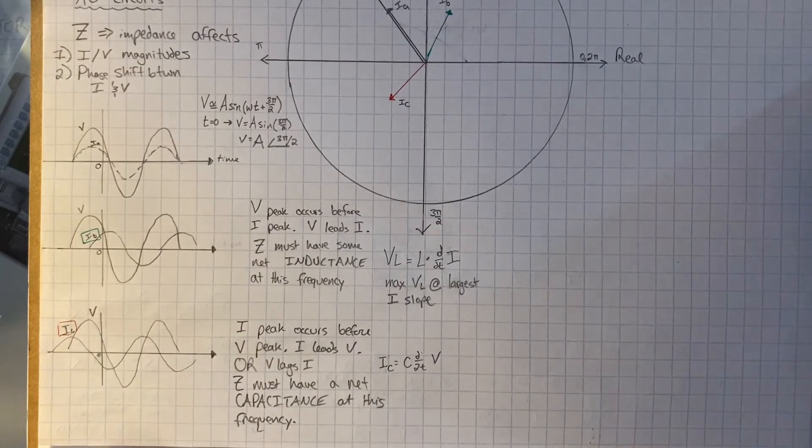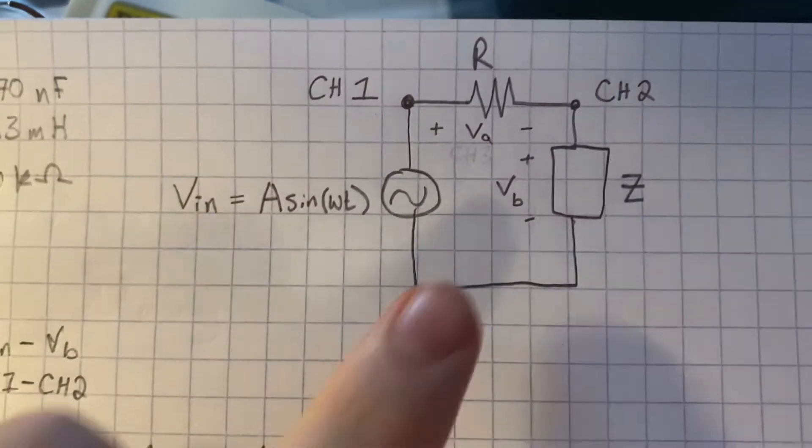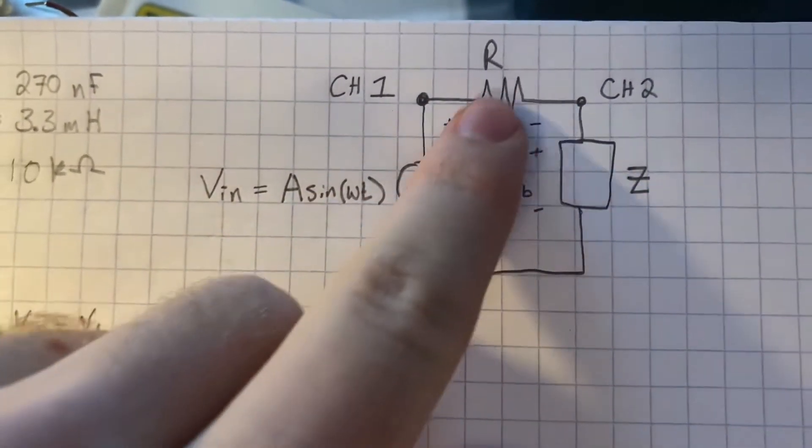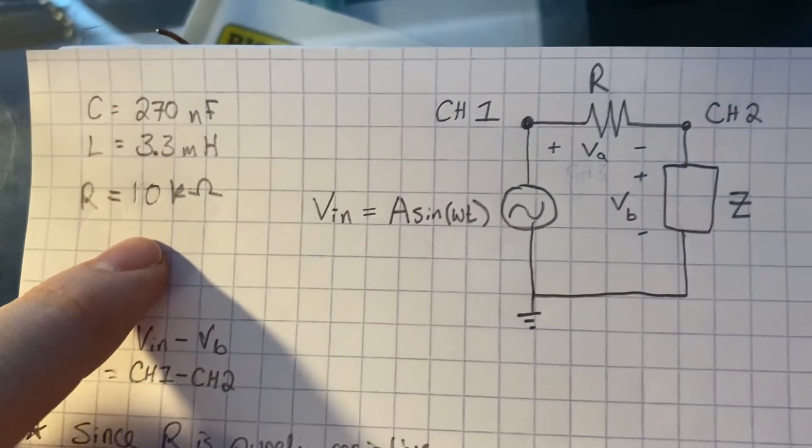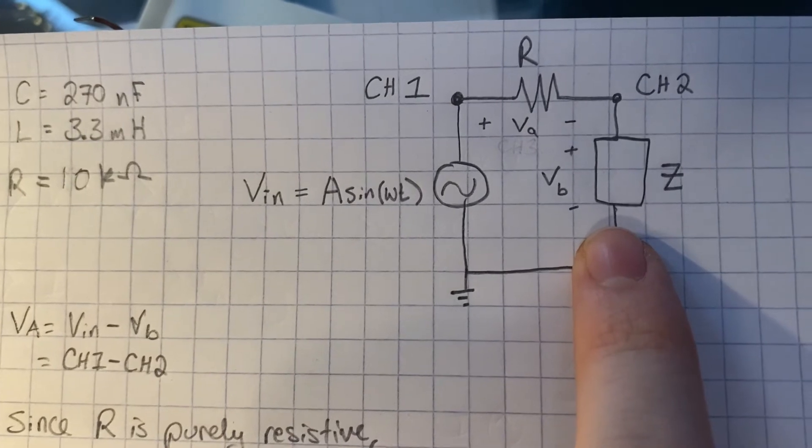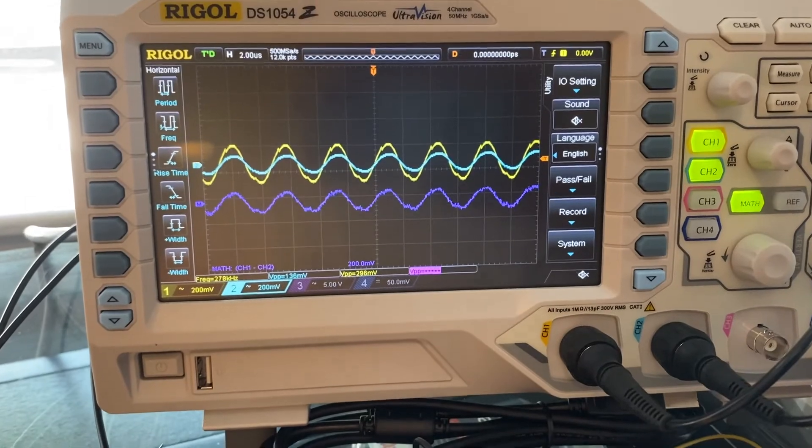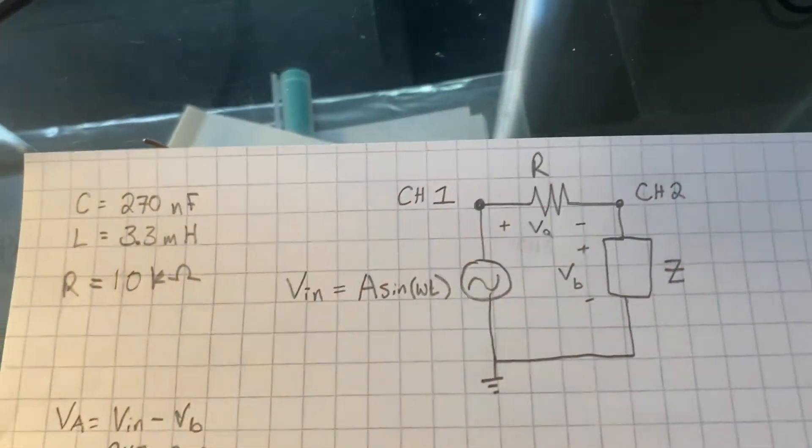Now, if we look at what we have set up here on the bench, we have a circuit like this, where we have some input voltage, we have some resistor, 10k, and then we're going to swap out the impedance and see how the phase reacts on the scope here of the Rigol 1054Z.